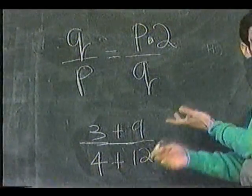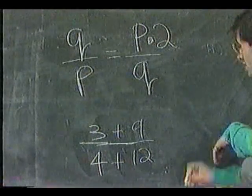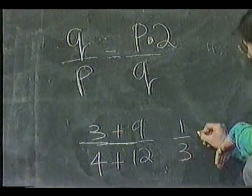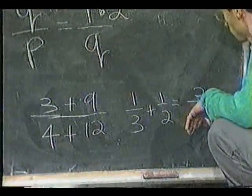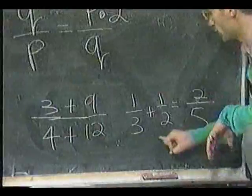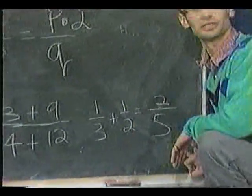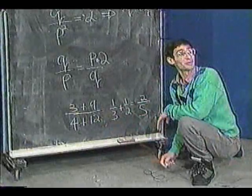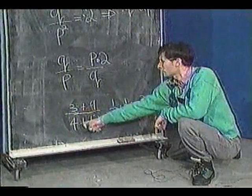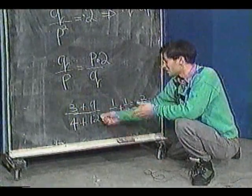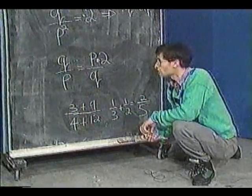It's something, of course, you can't do normally. It's no way to add fractions. If you said 1 third plus 1 half equals 2 fifths, just adding numerators and denominators, that's nonsense. But if the two fractions are equal, it works. 3 quarters, 3 plus 9 over 4 plus 12 is the same as 3 quarters, the same as you started out with.